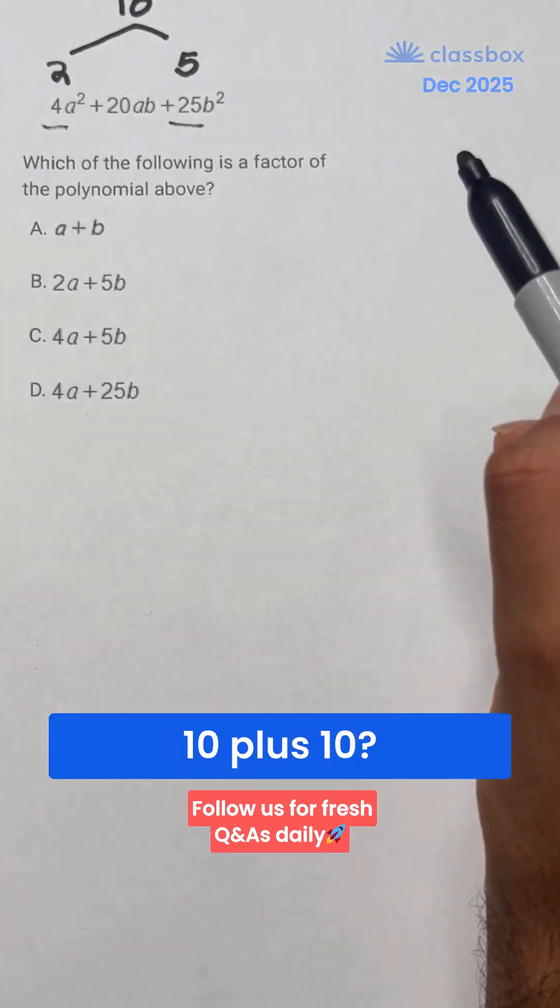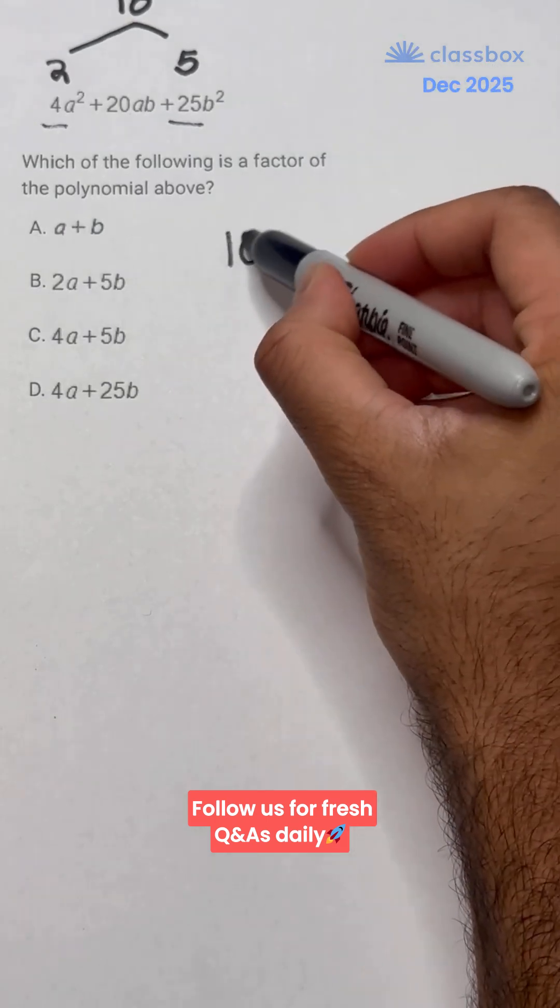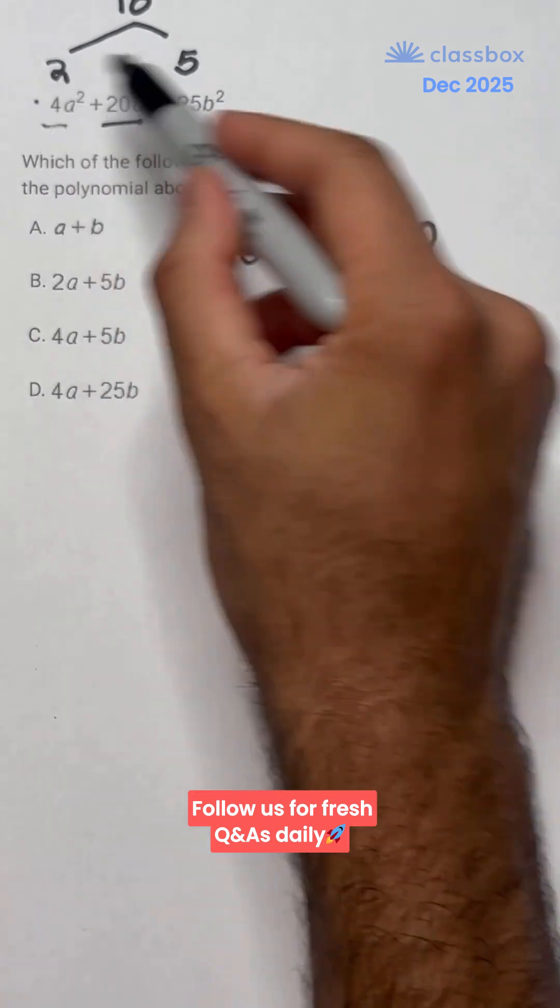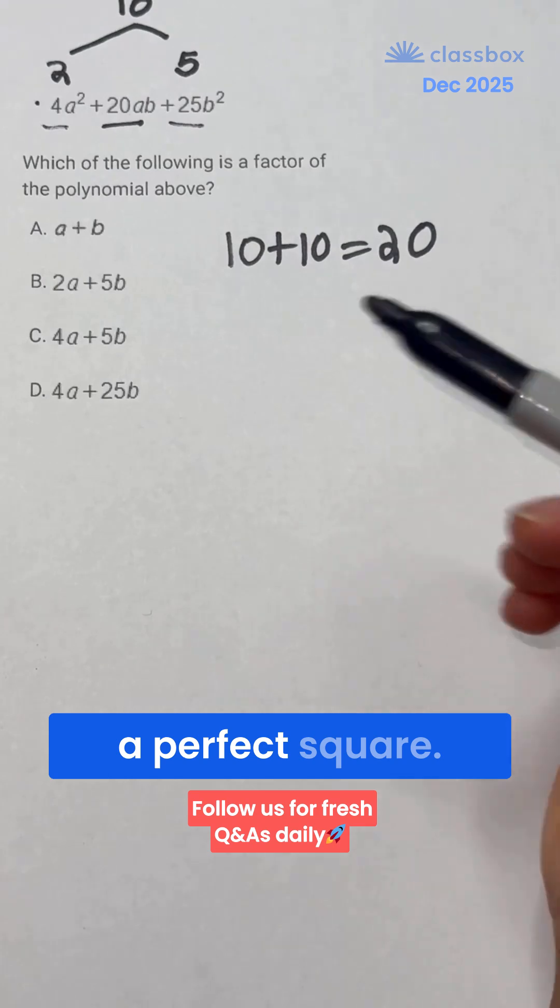Now what's 10 plus 10? Well, 10 plus 10 is 20, meaning that this polynomial is a perfect square.